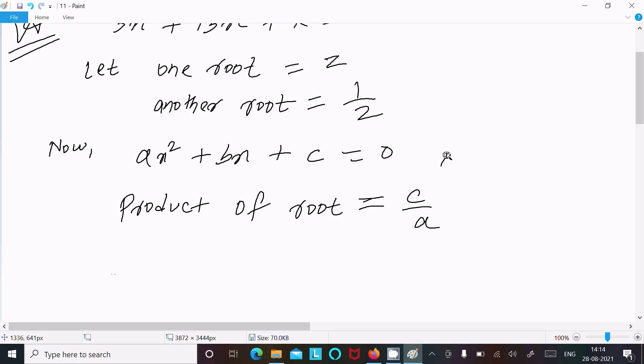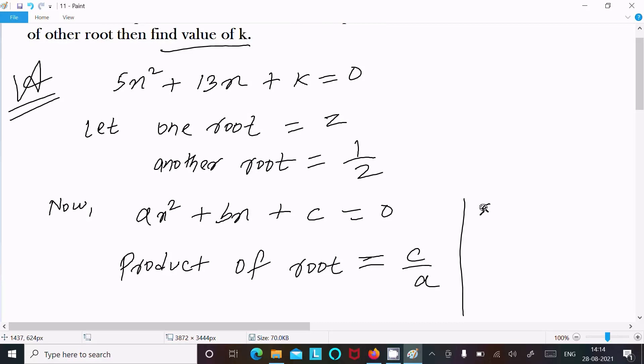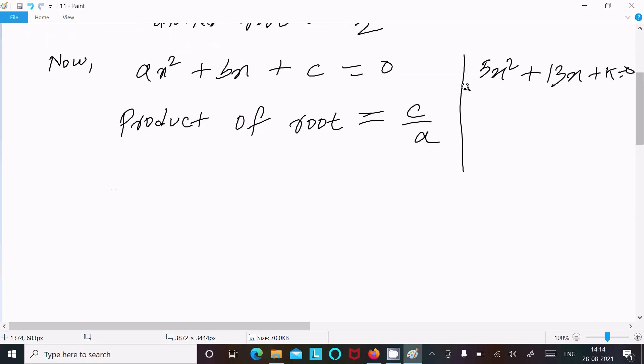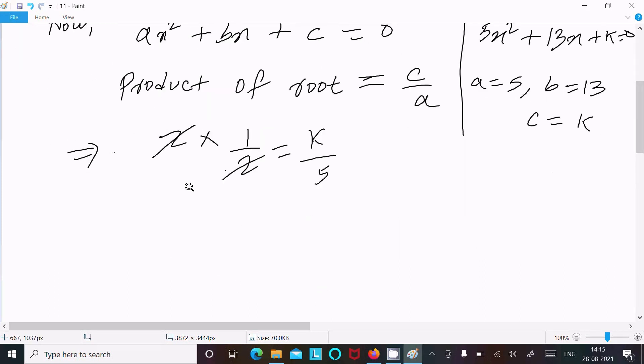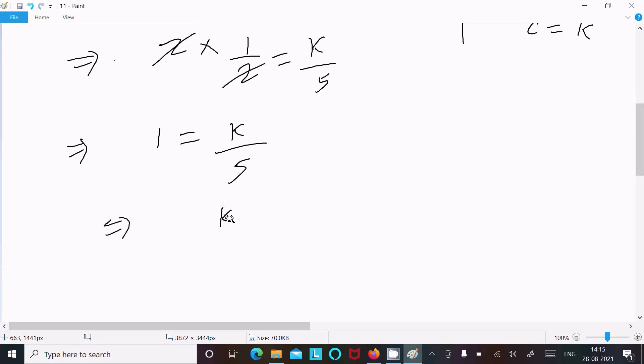Now, writing the equation: 5x² + 13x + k = 0. Here, a value is 5, b value is 13, and c value is k. So product of roots: first root is z and second root is 1/z, equal to c/a. The c value is k and a value is 5. So z cancels: 1 = k/5, or we can write k = 5. So this is our answer.